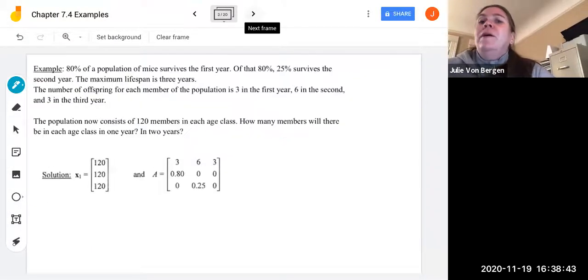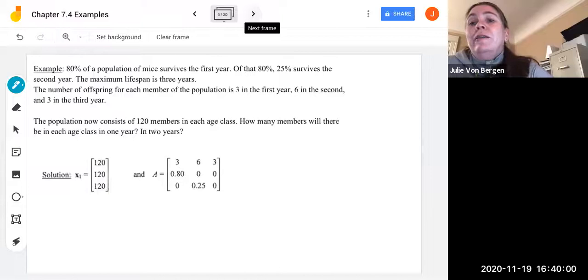So let's start with the first example, looking at a population of mice. So in this example, 80% of a population of mice survives the first year. Of that 80%, 25% survives the second year. The maximum lifespan is three years. If you've ever had a pet mouse or guinea pig, you're familiar with that three-year value. The number of offspring for each member of the population is three in the first year, six in the second, and three in the third year. The population now consists of 120 members in each age class. So we need to find how many members will there be in each class in one year and in two years.